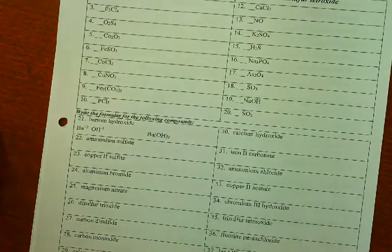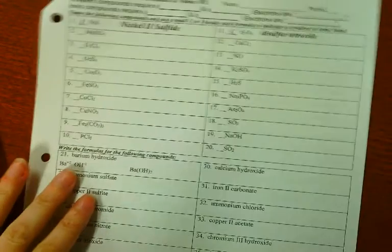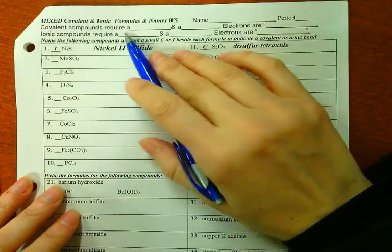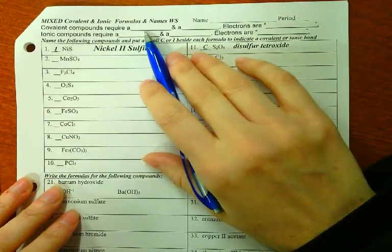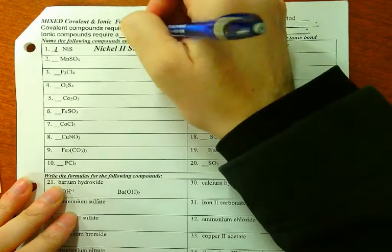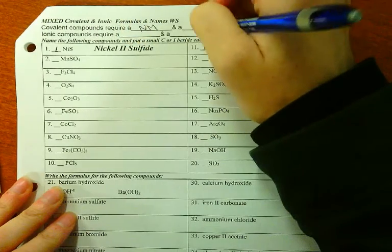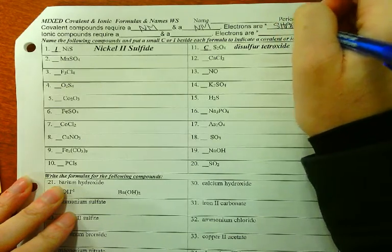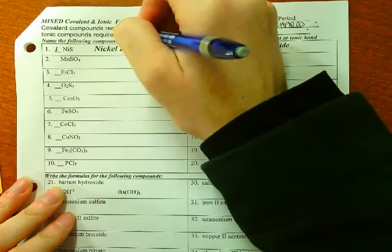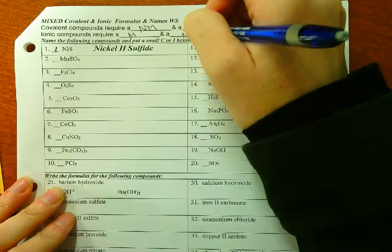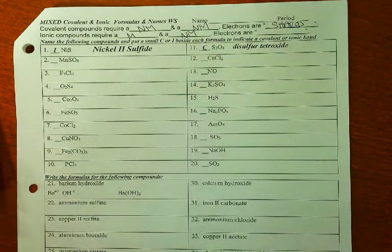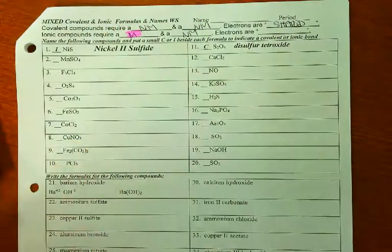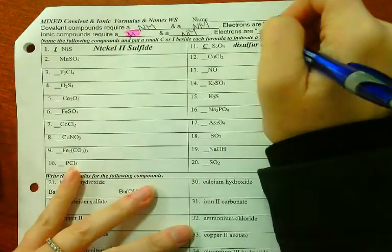Look at page 5. This is test conditions. Covalent compounds require a nonmetal and a nonmetal. Electrons are shared. Ionic compounds require a metal and a nonmetal, you need one of each. In one word, what's the difference between ionic and covalent? Metal. That's the difference. Electrons are transferred.